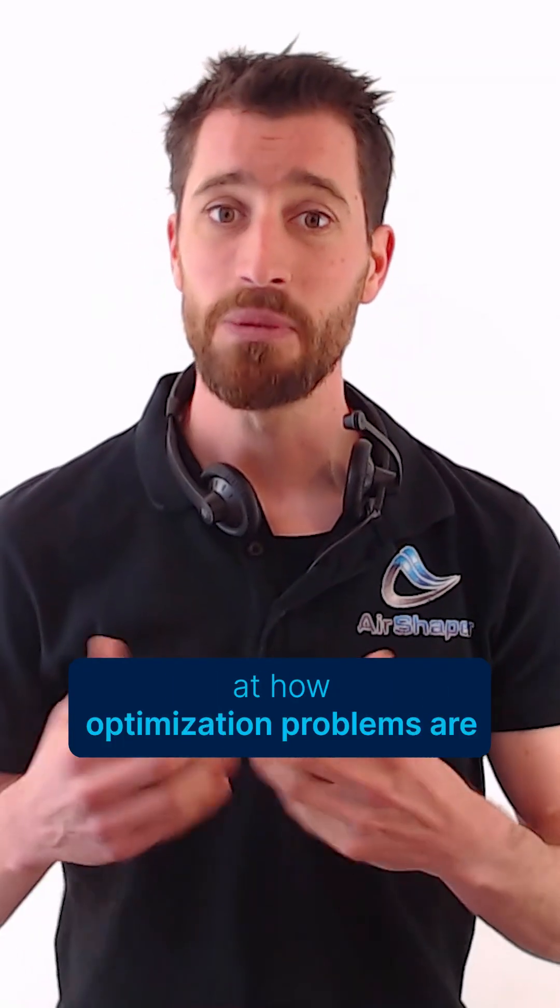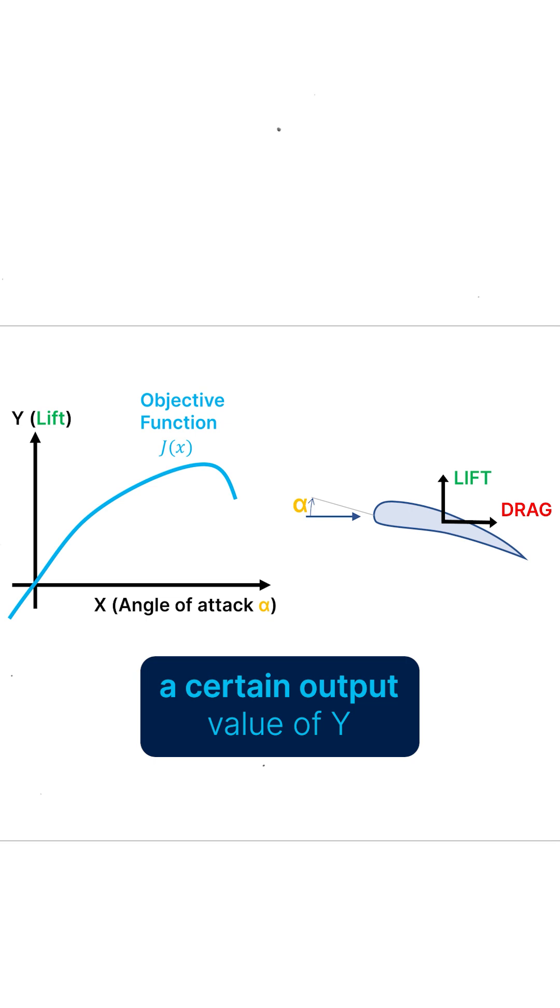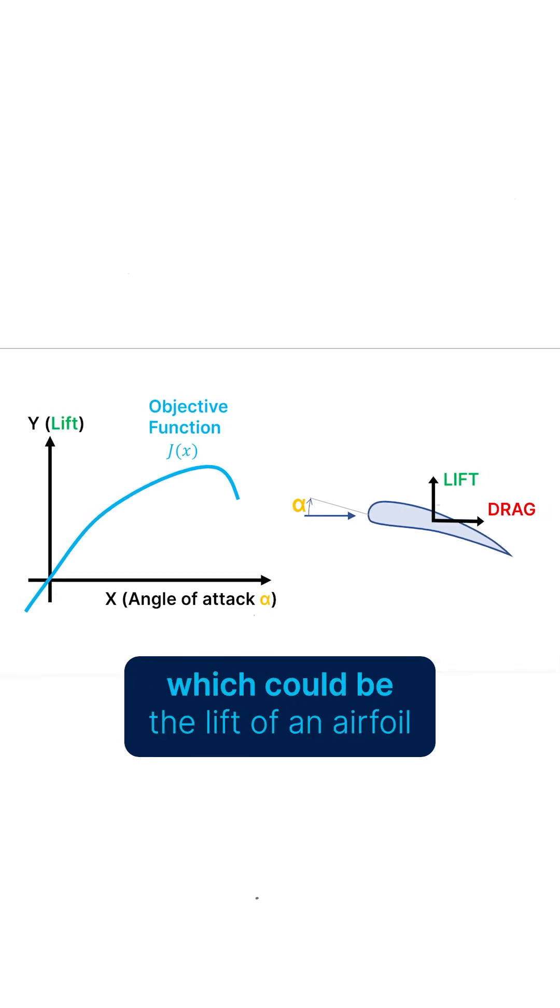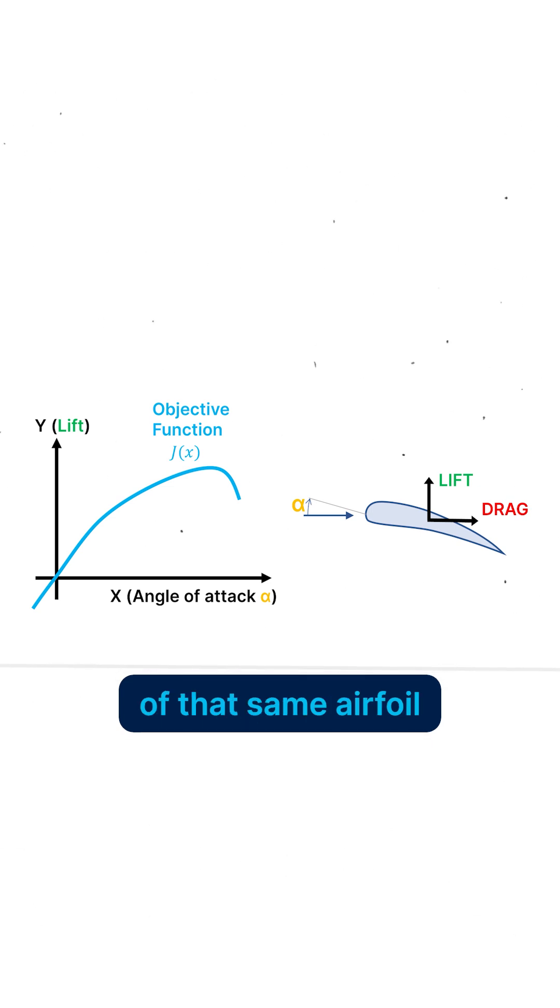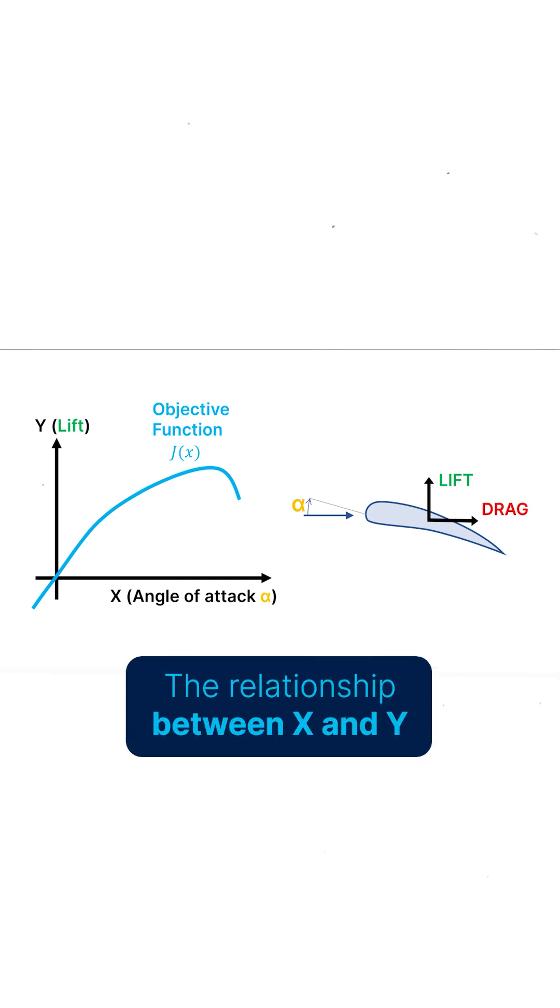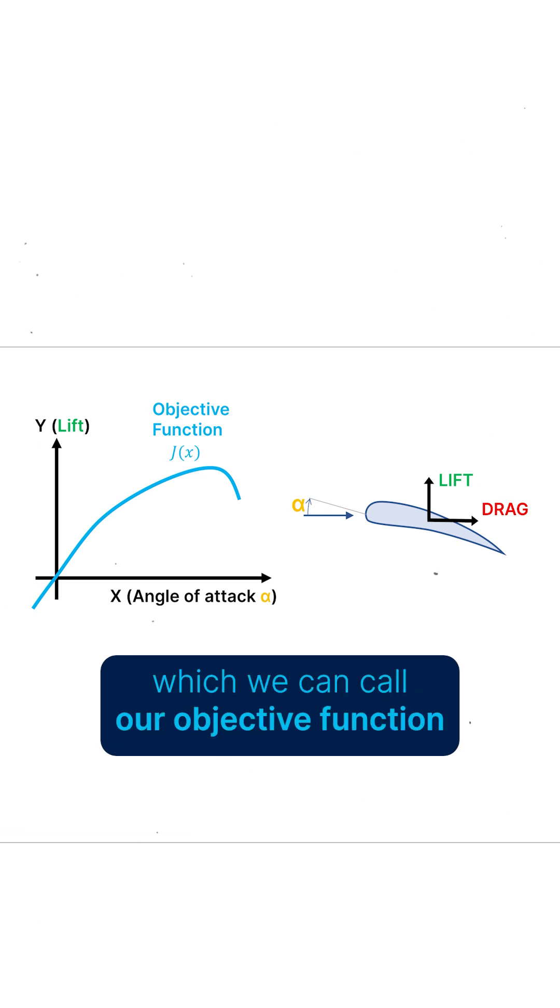Let's first have a quick look at how optimization problems are typically solved in general. Imagine we want to maximize a certain output value y, which could be the lift of an airfoil, by changing the input variable x, which could be the angle of attack of that same airfoil. The relationship between x and y can be expressed through a mathematical function, which we can call our objective function.